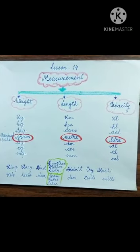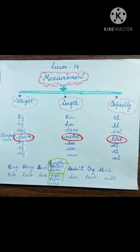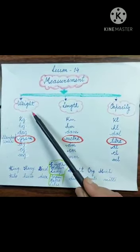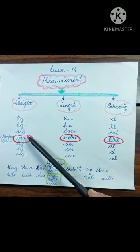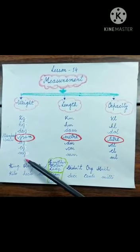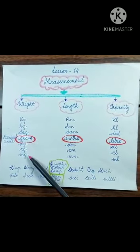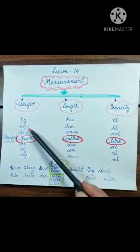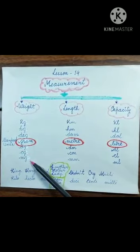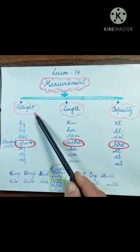Now we will understand about the various units of measurement through this chart. Solids are measured in kilogram, hectogram, decagram, gram, decigram, centigram and milligram. This is in decreasing order, going from bigger to smaller. Kilogram is the biggest unit and milligram is the smallest unit, and gram is the standard unit of weight.